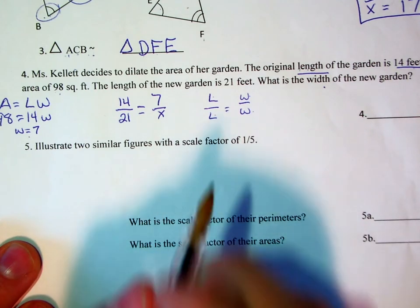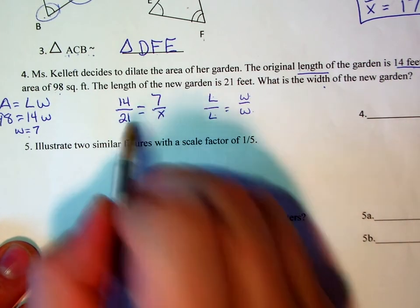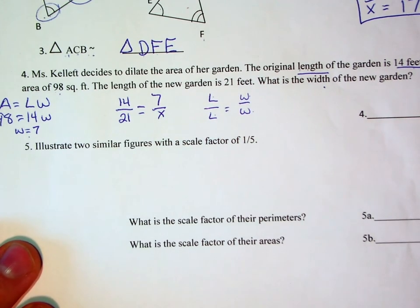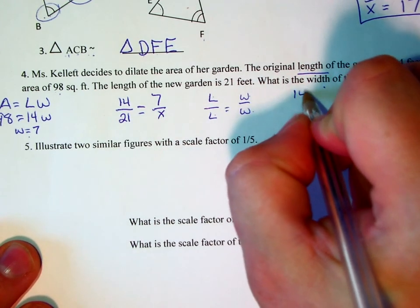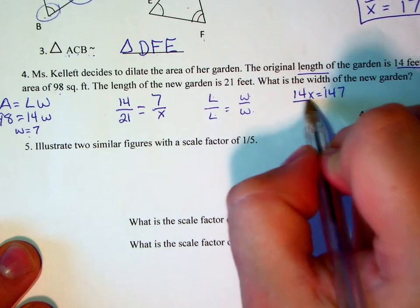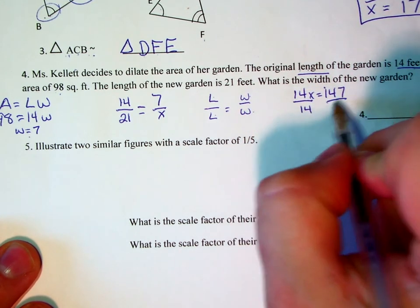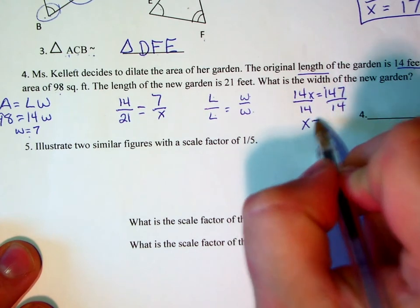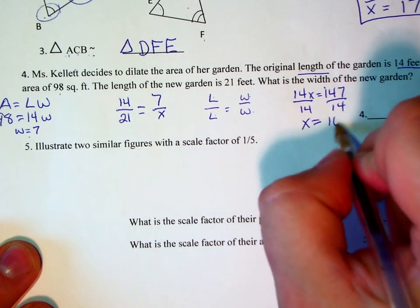And so now we're going to cross multiply 14x equals 147. We divide both sides by 14, and we determine that x equals 10.5.